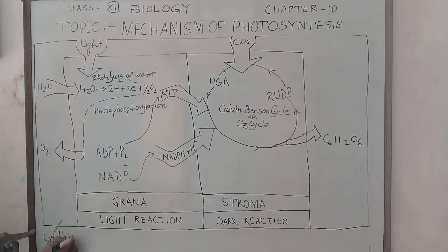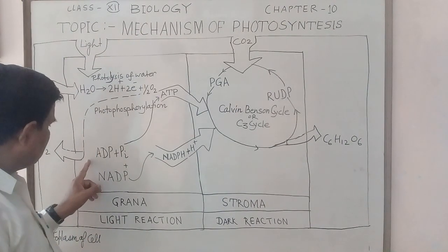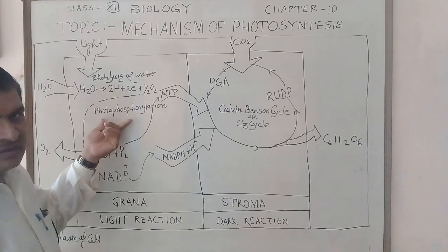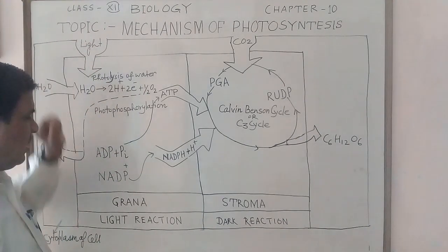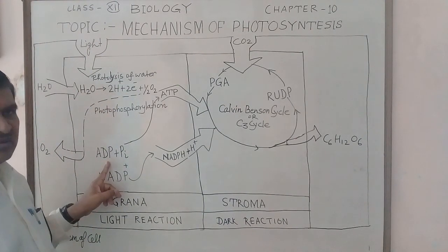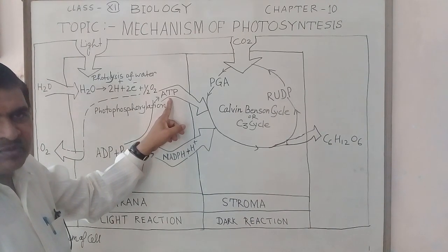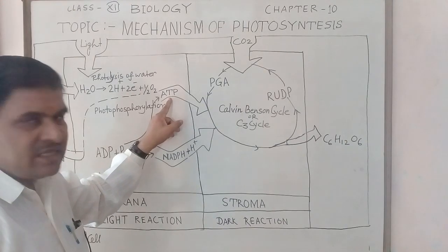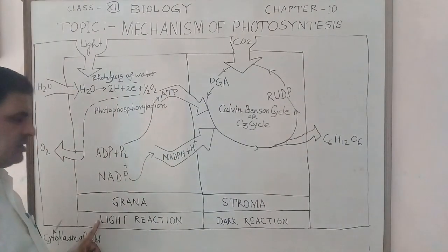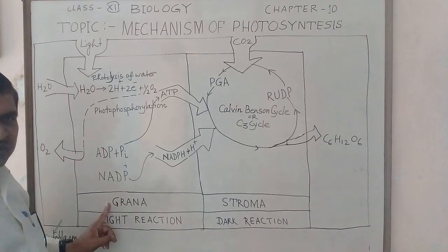Oxygen reaches the cytoplasm of the cell from the chloroplast grana. Photophosphorylation also occurs in the presence of light — in the presence of photons — where adenosine diphosphate combines with inorganic phosphate to synthesize adenosine triphosphate (ATP), which acts as assimilatory power in the light reaction of photosynthesis.